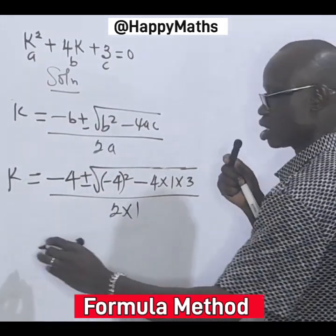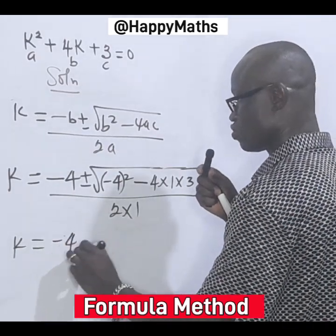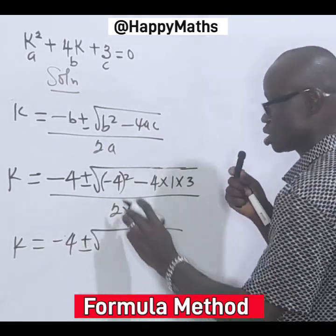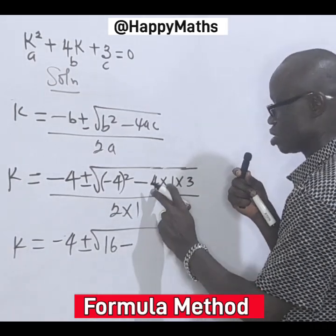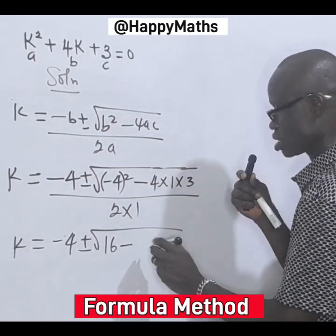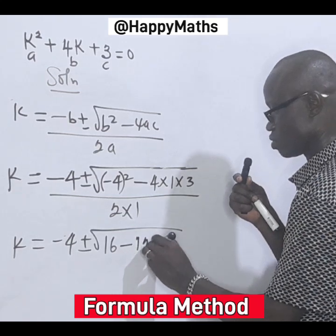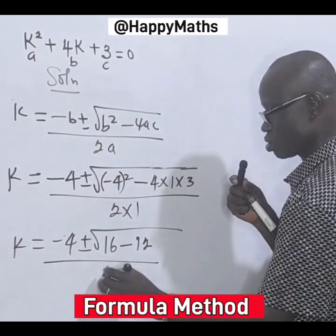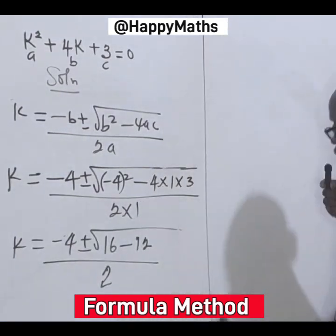Now we have it as k equal to minus 4 plus or minus root. 4 squared will give us 16. 4 times 1 times 3 will give us 12. Divide by 2. Now let's move.